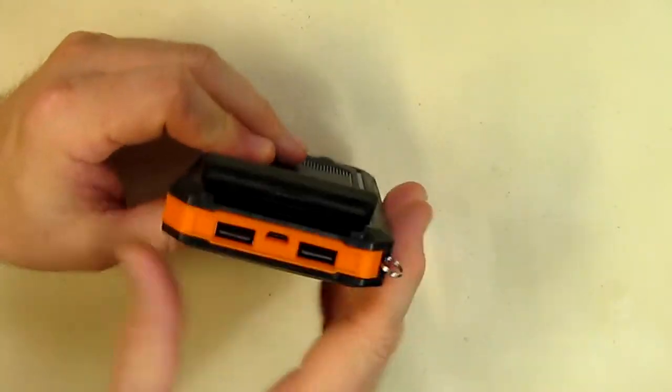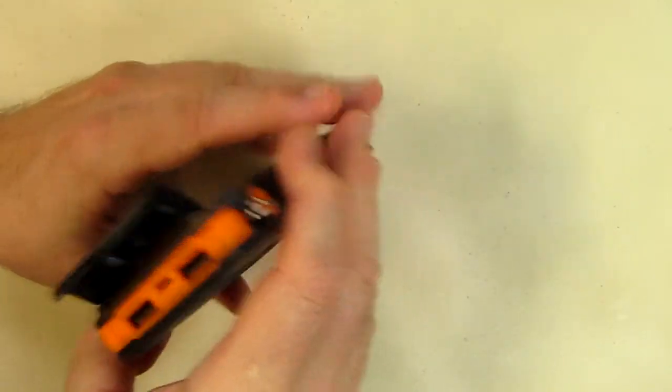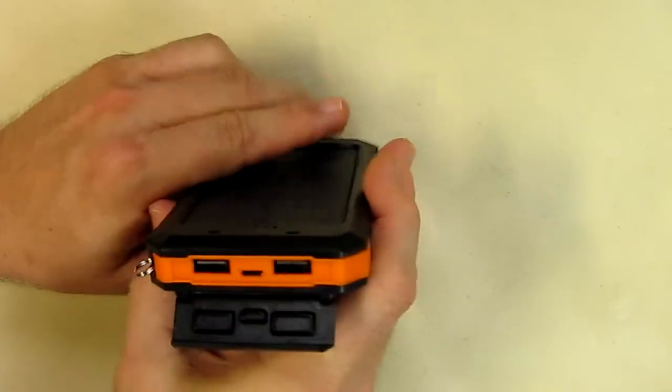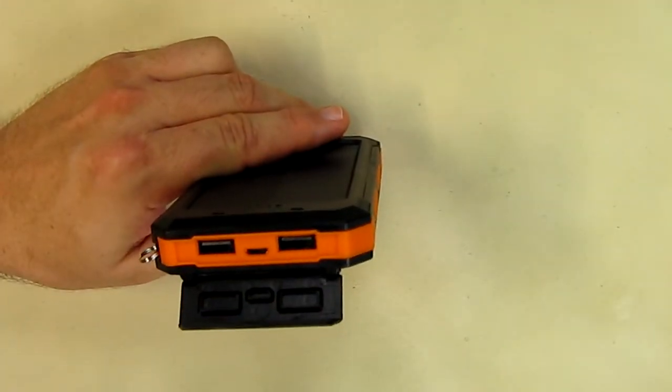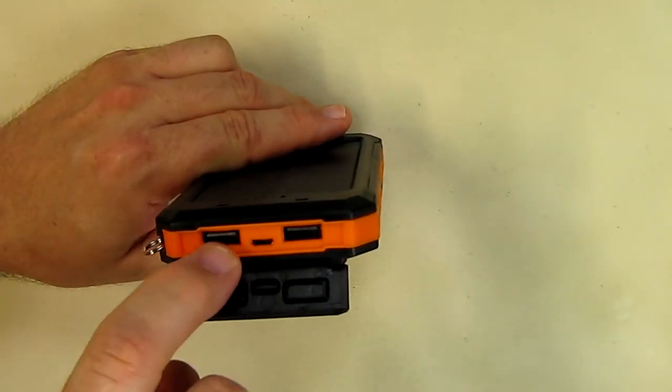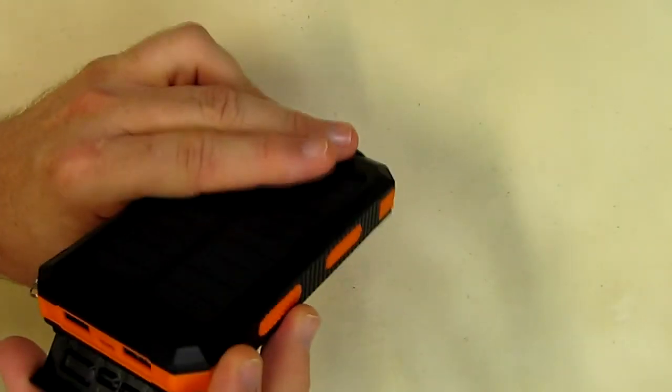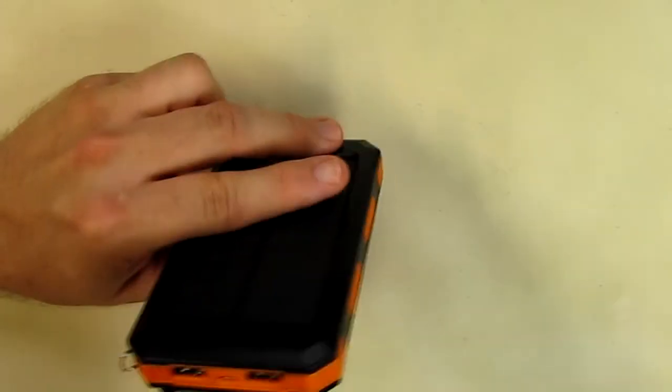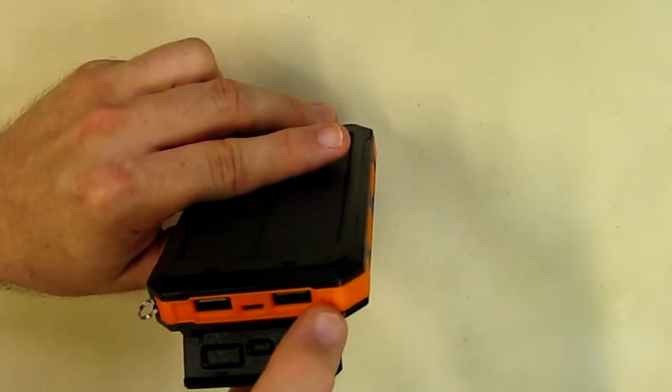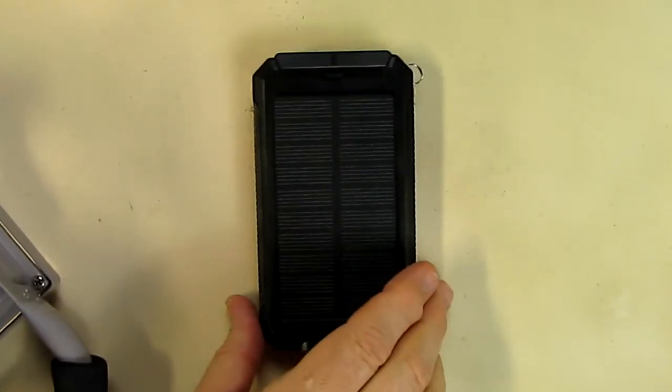I want to point out that there's two ports on here, port one and port two. Port one is five volts at one amp and port two is two point one amps five volts. They're not labeled, so I'm assuming that's port one and that's port two.